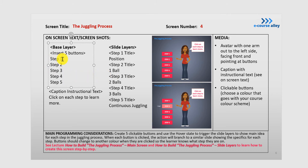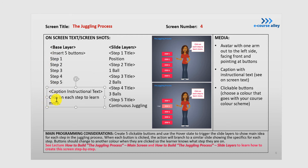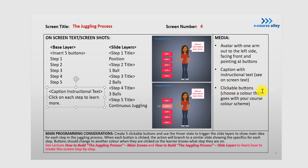On this screen we're going to create five buttons, step one to five. We're going to insert instructional text — 'click on each step to learn more' — which will be in the speech bubble next to the avatar. The avatar will have one arm out to the left side, facing front, pointing at the buttons, with a caption with instructional text. You can choose a color that goes with your course color scheme — I'm choosing this pinkish reddish color.